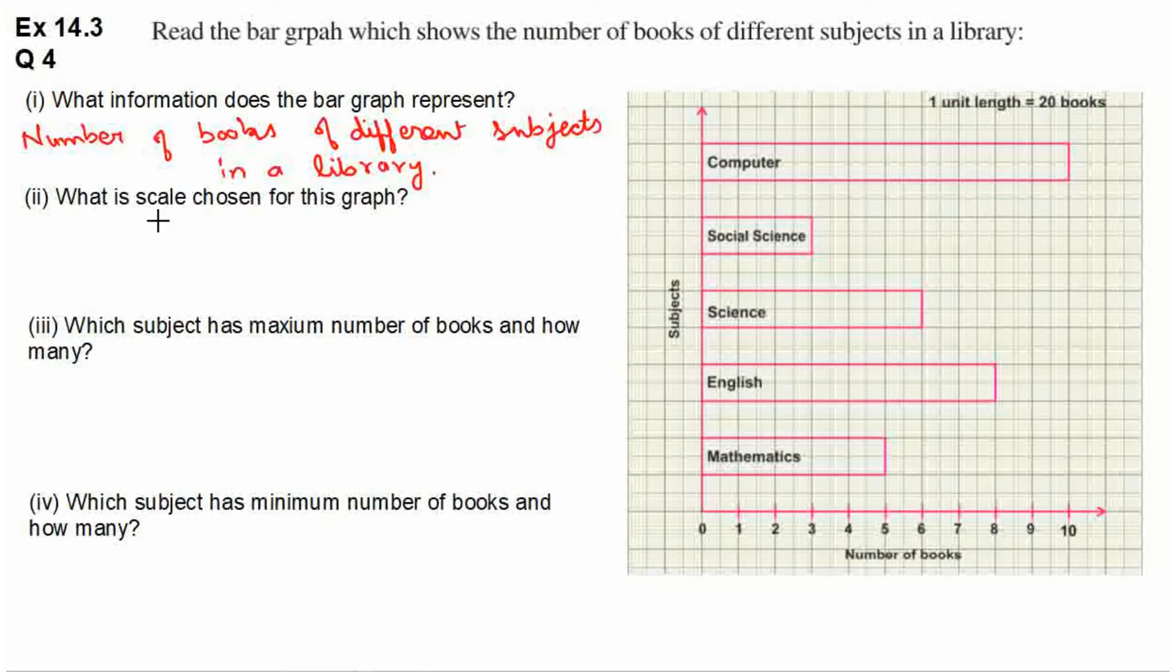Second question is, what is the scale chosen for this graph? Graph scale means that it represents 1 unit length. Now, here it is given, 1 unit length is equal to 20 books. So, this is the scale of this graph.